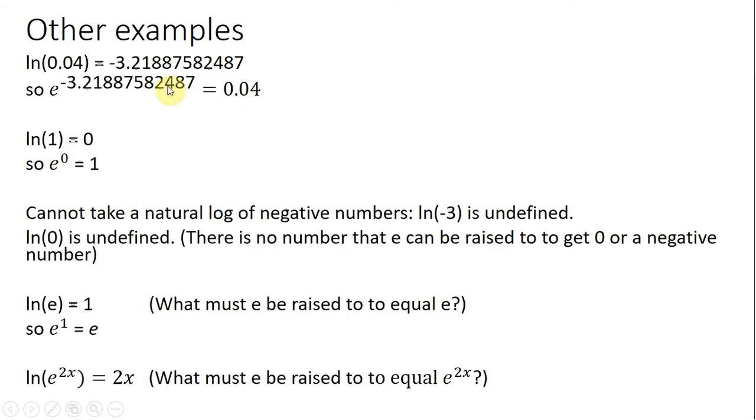Let's do some other examples. The natural log of 0.04 equals minus 3.2188, and so on. And again, in other words, if e were raised to that minus 3.2188, it would equal 0.04. The natural log of 1 is 0. In other words, if e were raised to the power of 0, it would just equal 1.